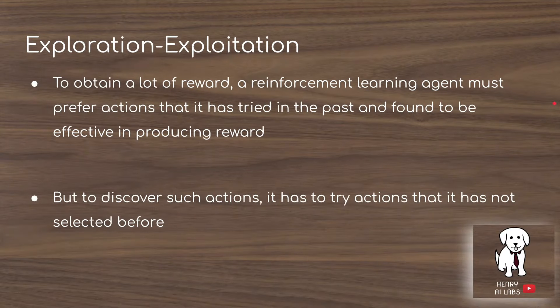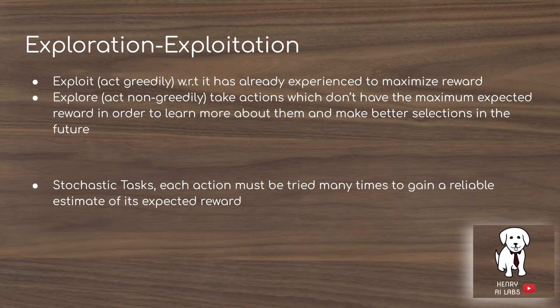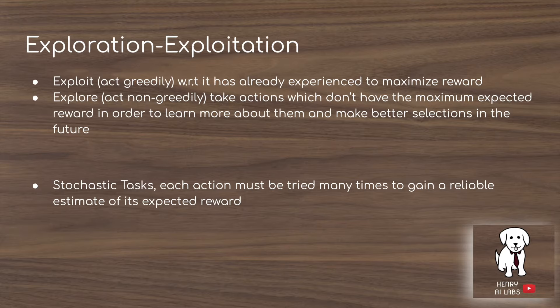The balance between exploration and exploitation is one of the most heavily studied problems in mathematics and computer science. In order to obtain a lot of reward, the agent will prefer the actions that it's tried in the past and have been shown to be successful. But in order to find those actions, it has to take risks and try actions that it hasn't selected before, such that maybe it will discover a new action with a higher reward. Exploiting means acting greedily — taking the action you expect to have the greatest reward — while exploring means acting non-greedily, sampling a random action that isn't the maximum expected reward. This is further complicated in stochastic tasks, where each action must be tried many times to gain a reliable estimate of the reward because the reward itself has some randomness to it.